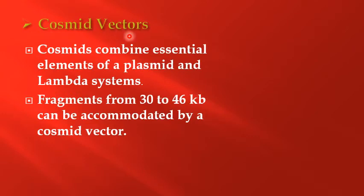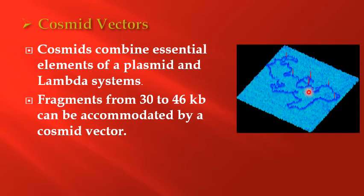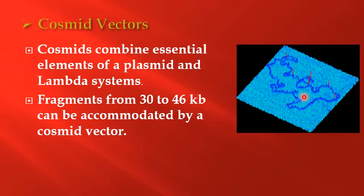The third type is the Cosmid vector, which results from combining essential elements of the plasmid and Lambda systems. Fragments from 30 to 46 kilobases can be accommodated by this type of vector.